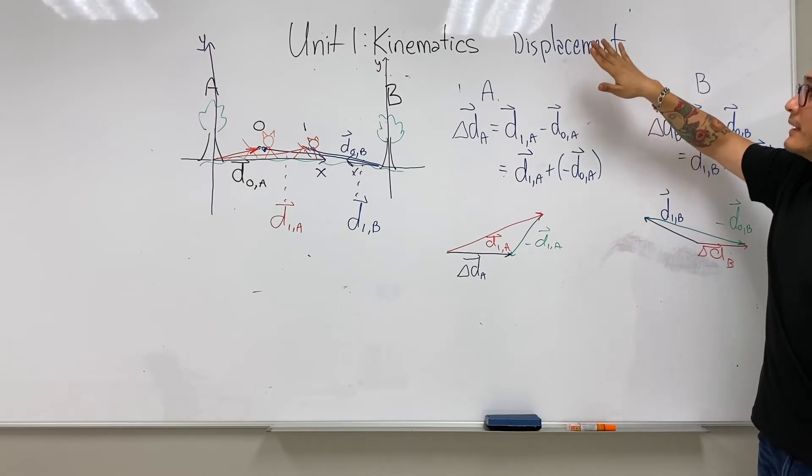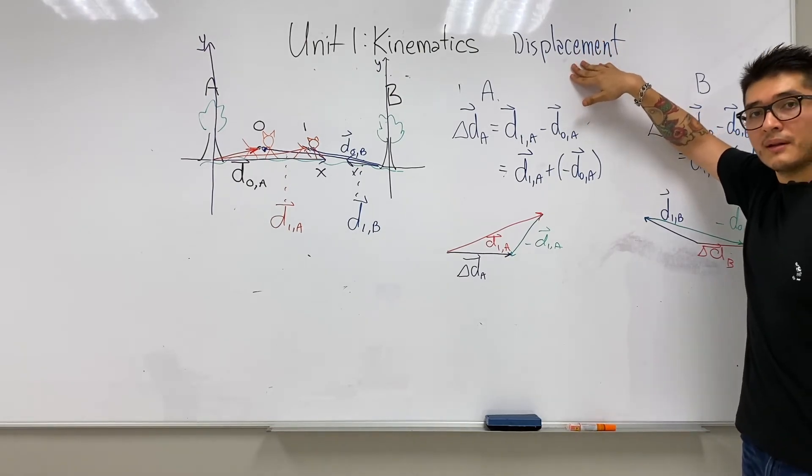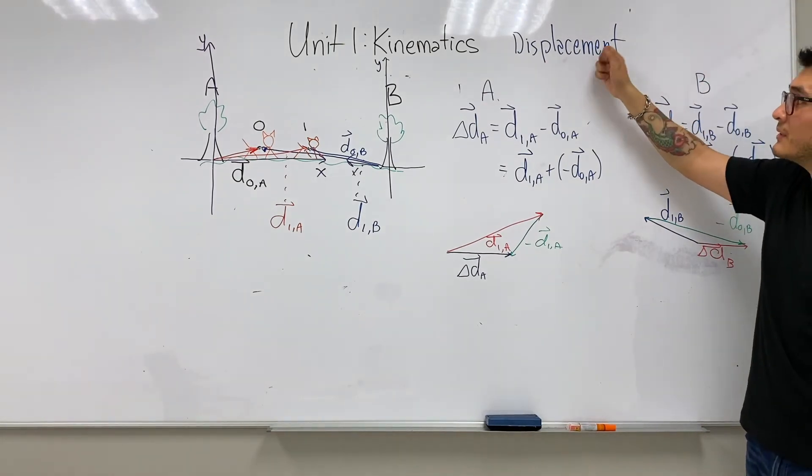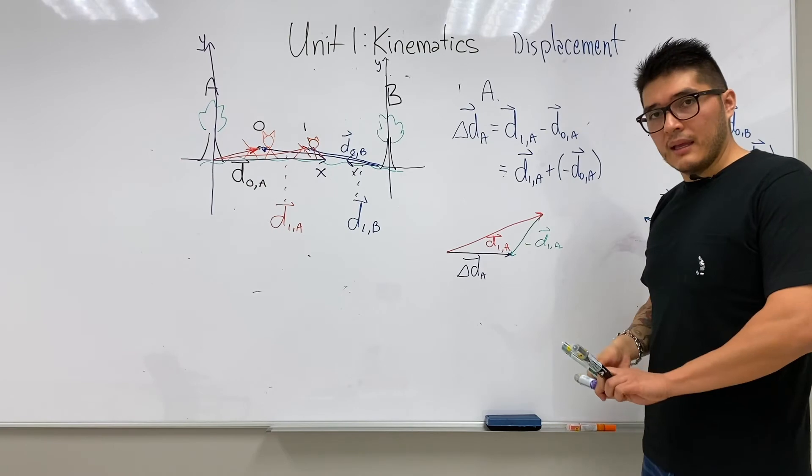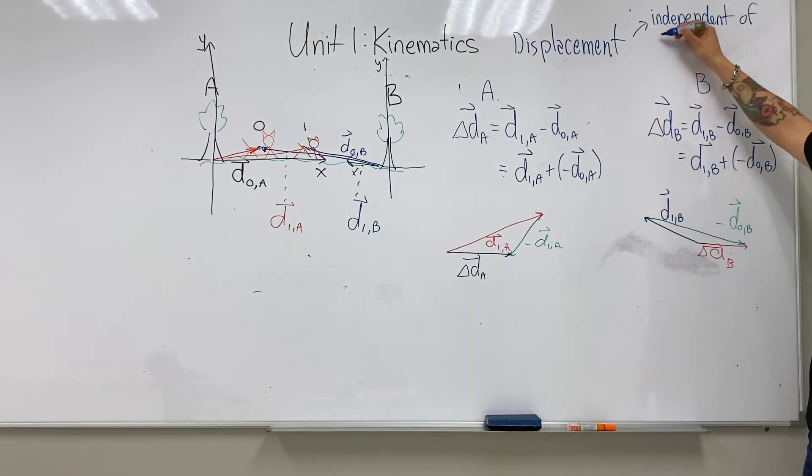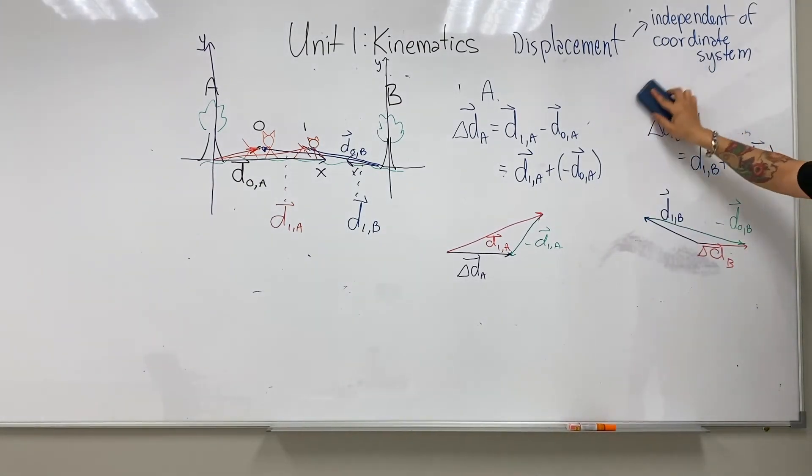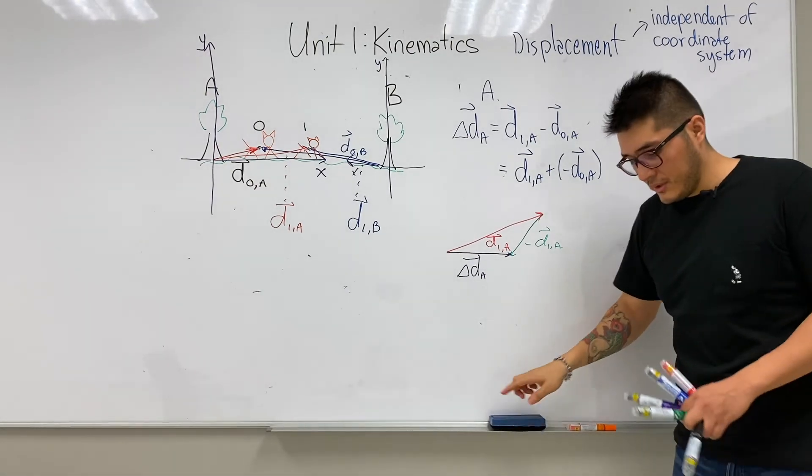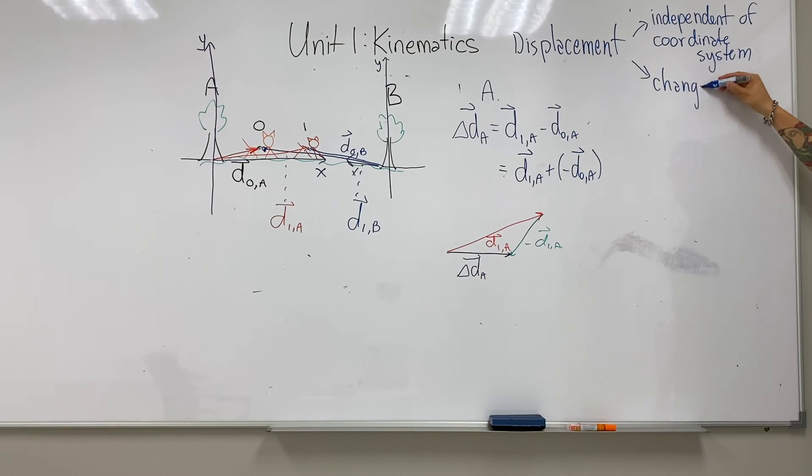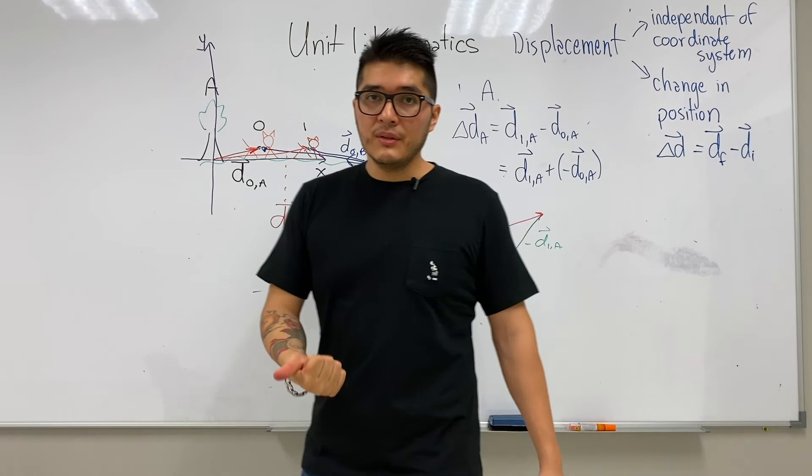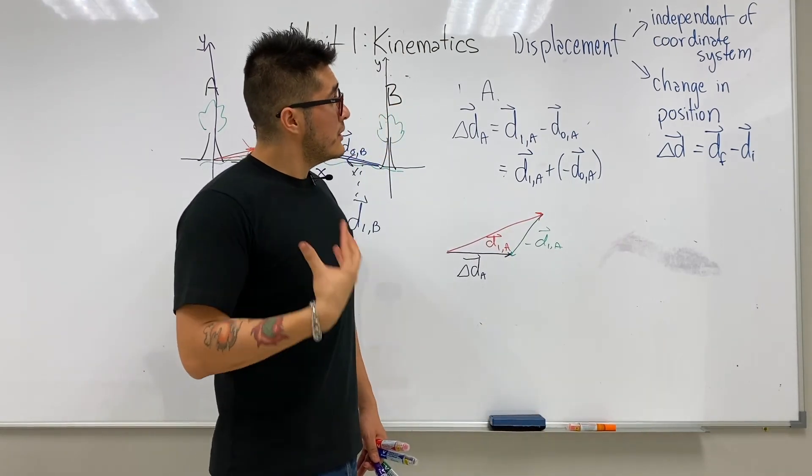So our displacement vector is independent of the coordinate system and it gives us the change in the object position. So the formula, this is the first equation that we learned in physics: displacement is the final position minus the initial position vector. And in order to do that, we have to introduce vector addition, scalar multiplication, and vector subtraction. So this is a lot to take care of.